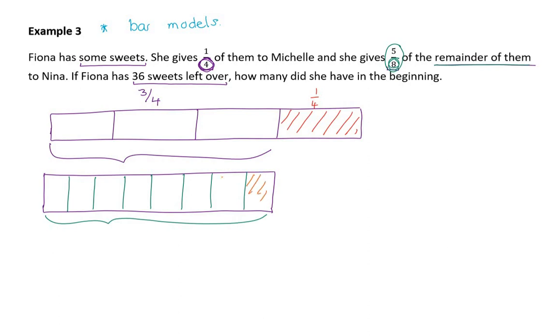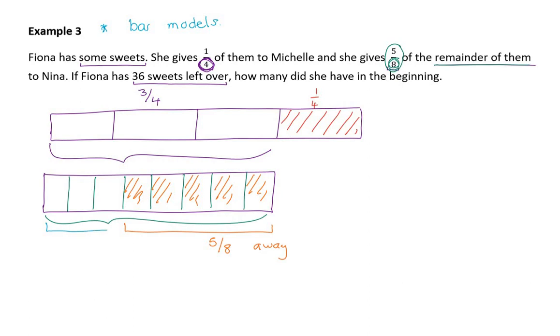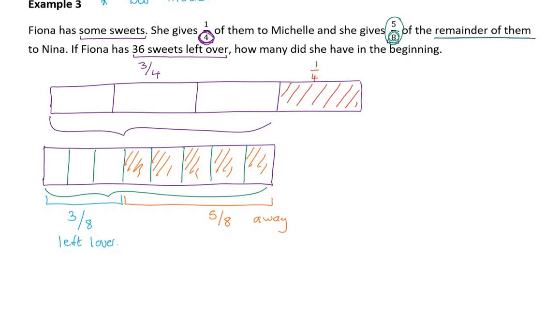Now, if she gives those away to Nina, what will she have left? Well, it's very clear to me that she has three blocks out of eight left over. Now, this question says, left over, if Fiona has 36 sweets left over. So now I know that these three blocks represent 36 sweets.